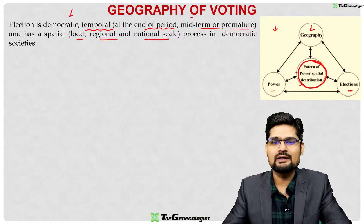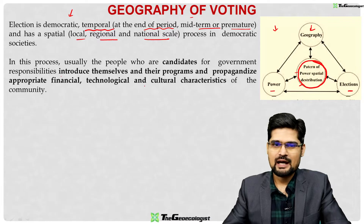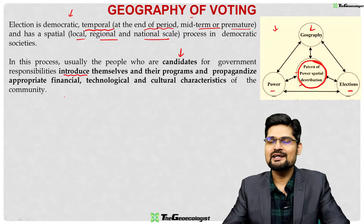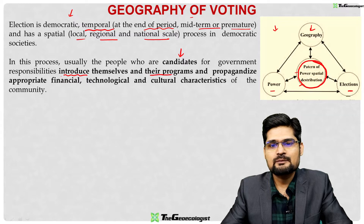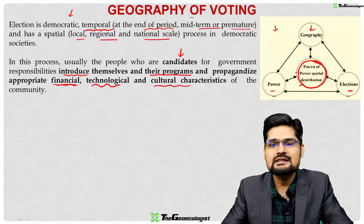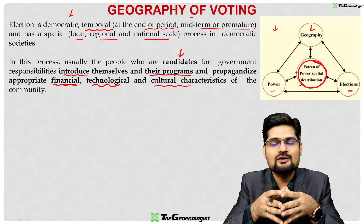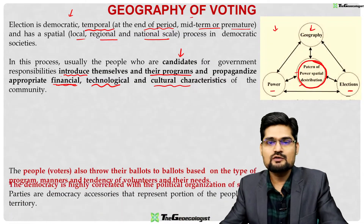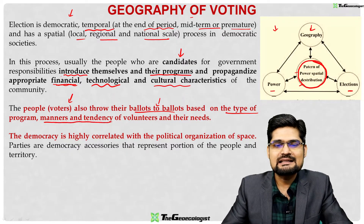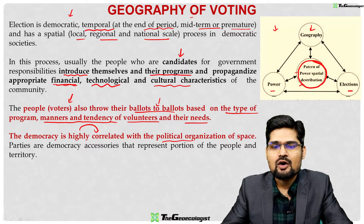At any scale — local, regional, national — we can talk about the processes involved in democratic society. In this democratic process, candidates for government responsibilities introduce themselves to voters, their programs, their propaganda, their approach, and they utilize the financial, technological and cultural characteristics of the community. Voters throw their ballots based on the type of program, manners and tendency of volunteers and their needs. Democracy is highly correlated with the political organization of space.